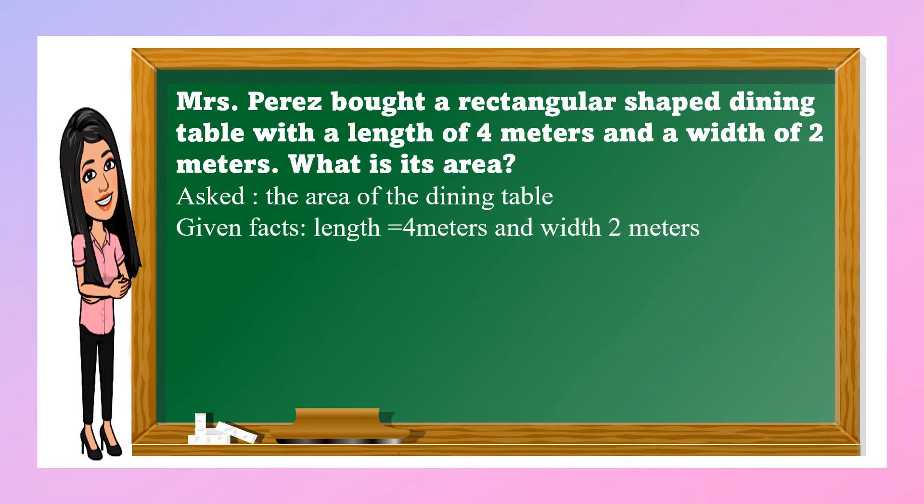Given facts: length equals 4 meters and width is 2 meters. Operation: of course, multiplication, because we are finding the area of a rectangle. Number sentence: 4 times 2. Because the formula for finding the area of the rectangle is length times width.